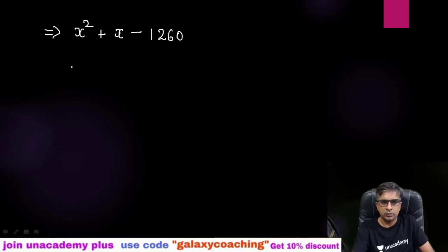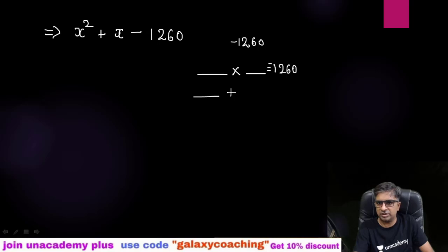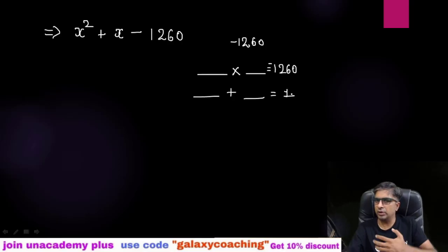Let us move to the next question. Here we have 1 × (−1260) = −1260. So now we need to find out the factors of −1260 in such a way that multiplication remains −1260 but the addition becomes 1.